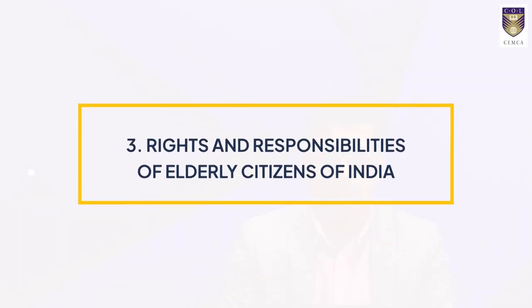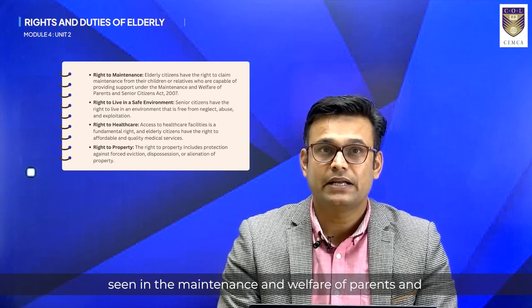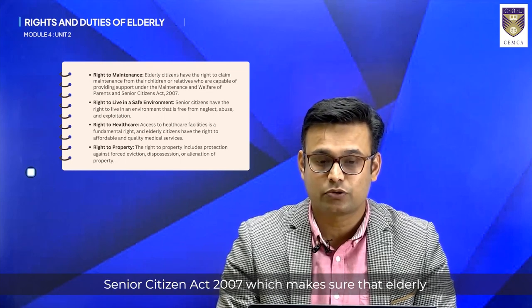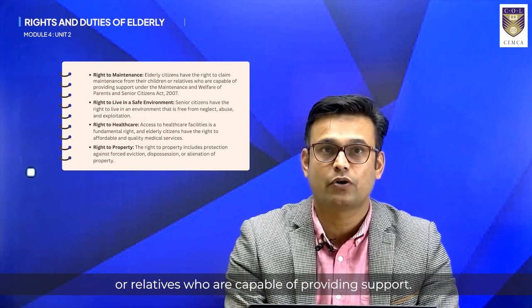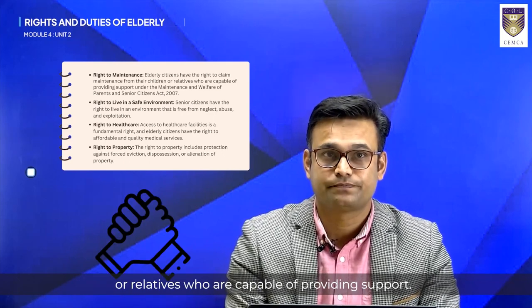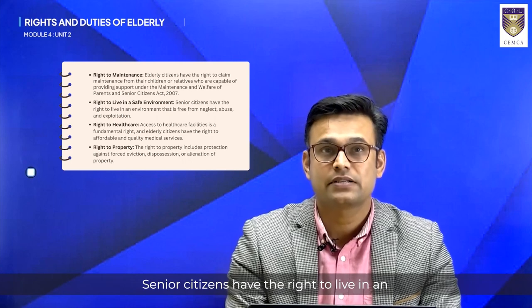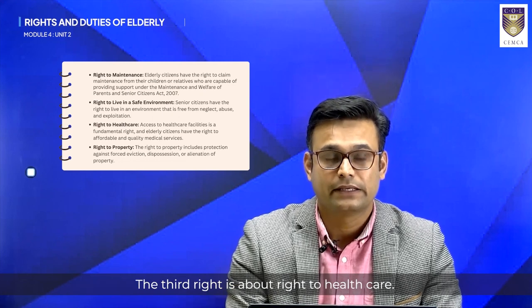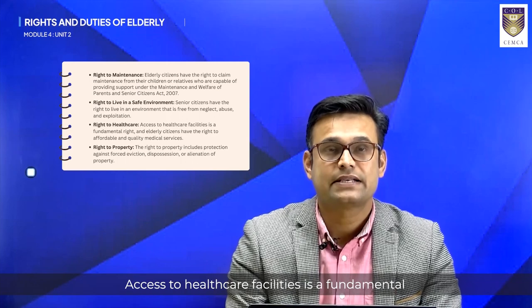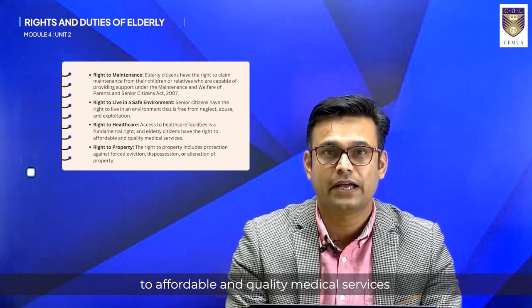Caregivers, let's first understand what are the rights of elderly citizens. The first right is the right to maintenance, as seen in the Maintenance and Welfare of Parents and Senior Citizens Act 2007, which ensures that elderly citizens have the right to claim maintenance from their children or relatives who are capable of providing support. The second right is the right to live in a safe environment — senior citizens have the right to live in an environment free from neglect, abuse and exploitation. The third right is the right to healthcare: access to healthcare facilities is a fundamental right and elderly citizens have the right to affordable and quality medical services.